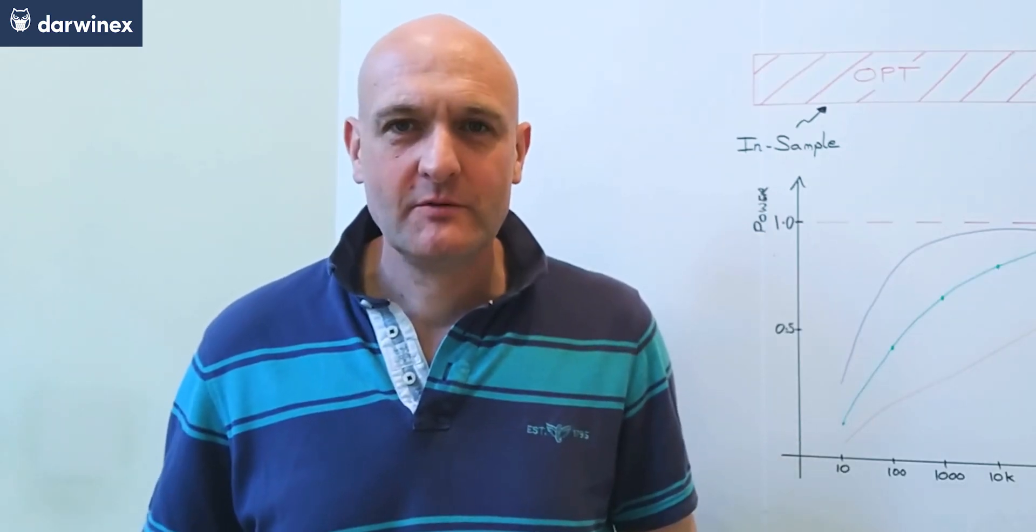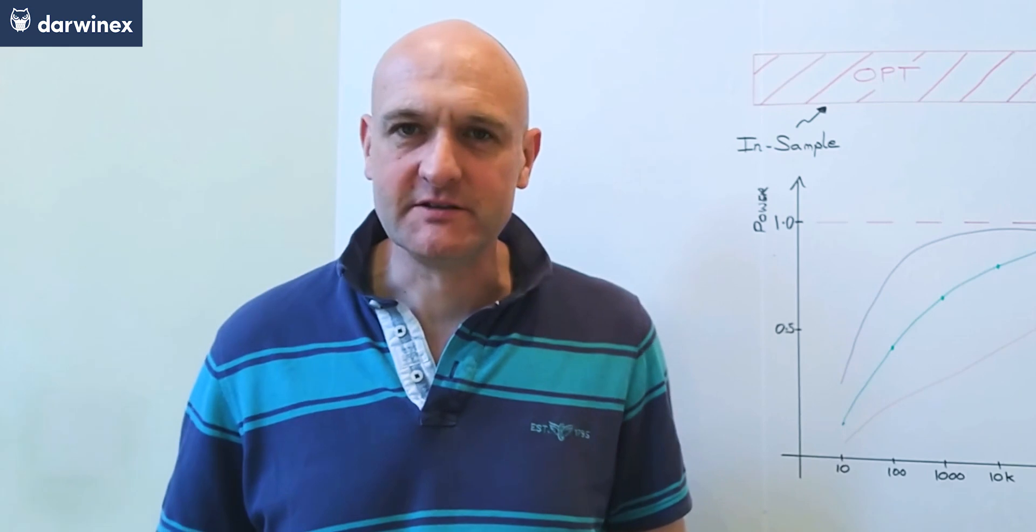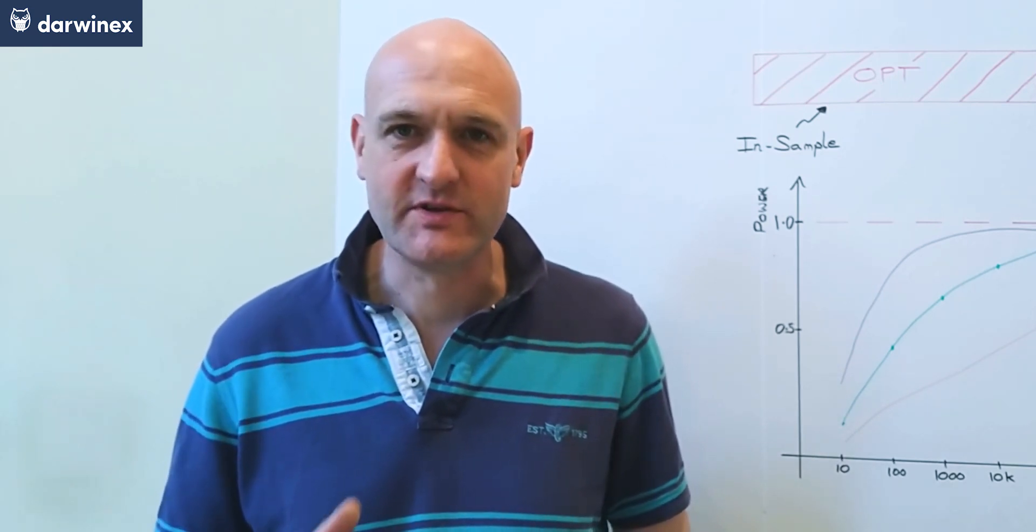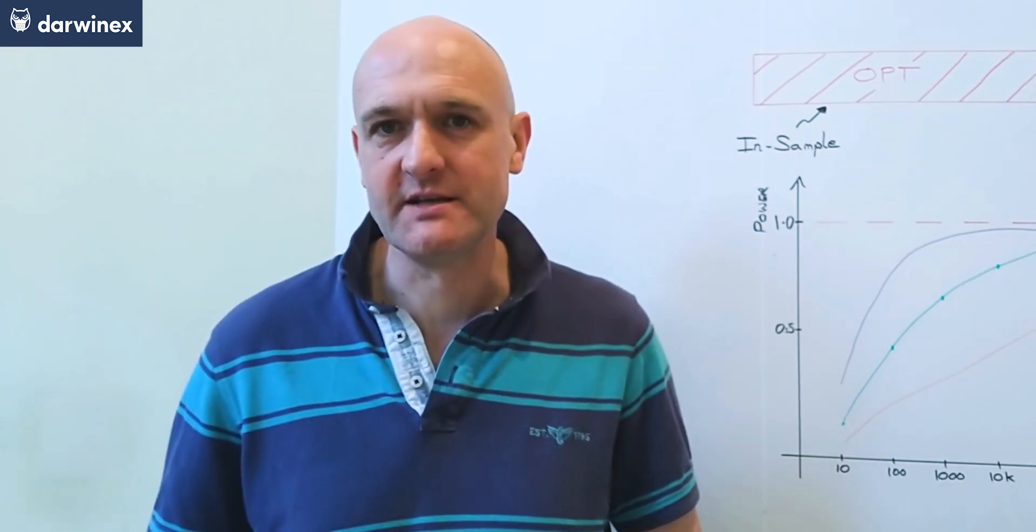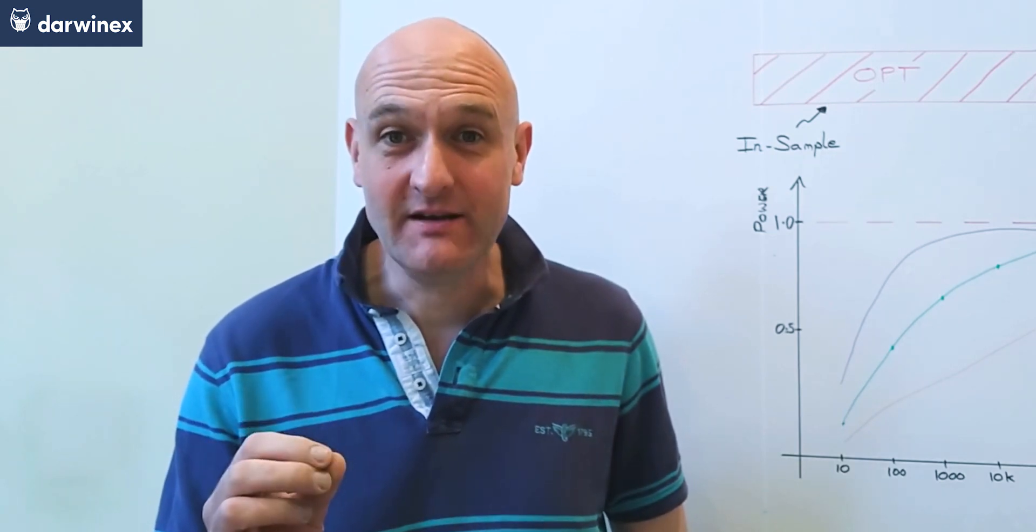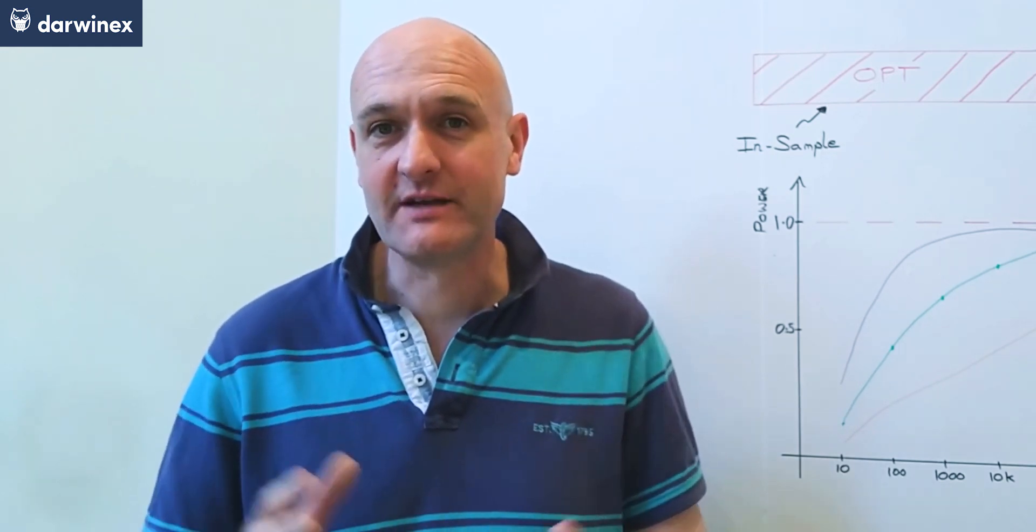In episode one, we looked at just how difficult it is to identify the best parameters with a genuine edge from an optimization, even when all of the other parameters had no edge at all.